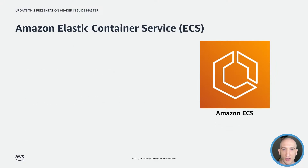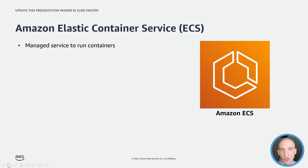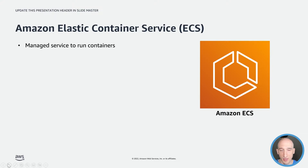Now let's talk about how we take those container images and turn them into apps running in the cloud. When we deploy containers to AWS, we have a few options to host those containers depending on our needs and level of complexity. The first option to look into is Amazon Elastic Container Service, or ECS. ECS is a highly scalable container management service, and you can use it to run, stop, and configure your containers on a cluster. With ECS, your containers are defined in a task definition that you use to run an individual task or task within a service — a configuration that runs and maintains a specific number of tasks at the same time.